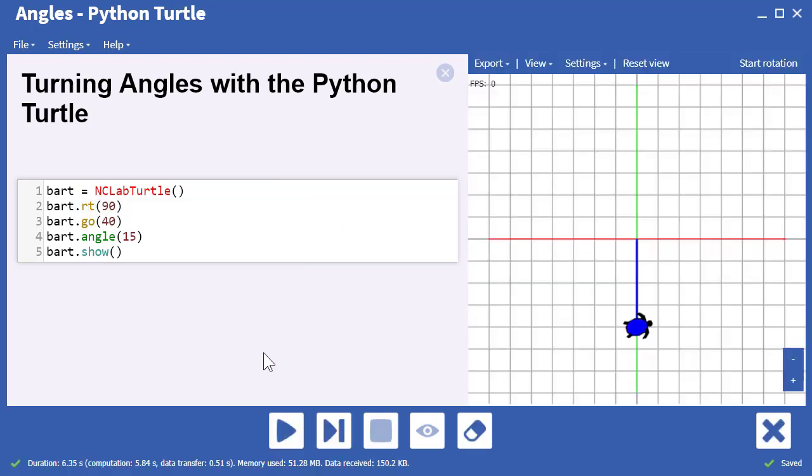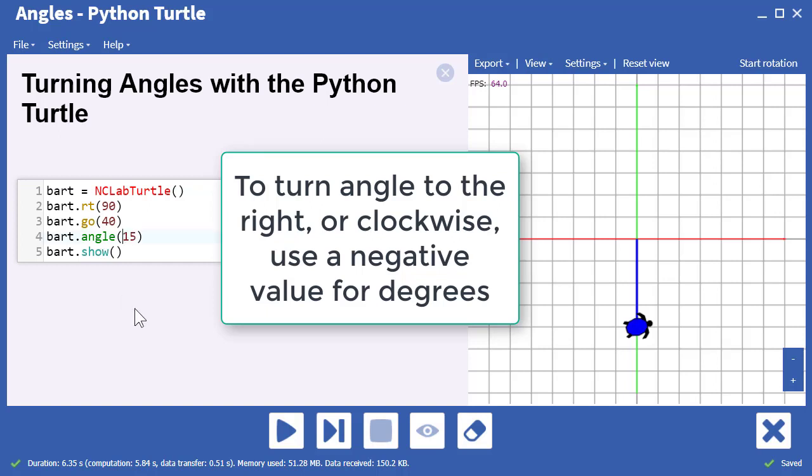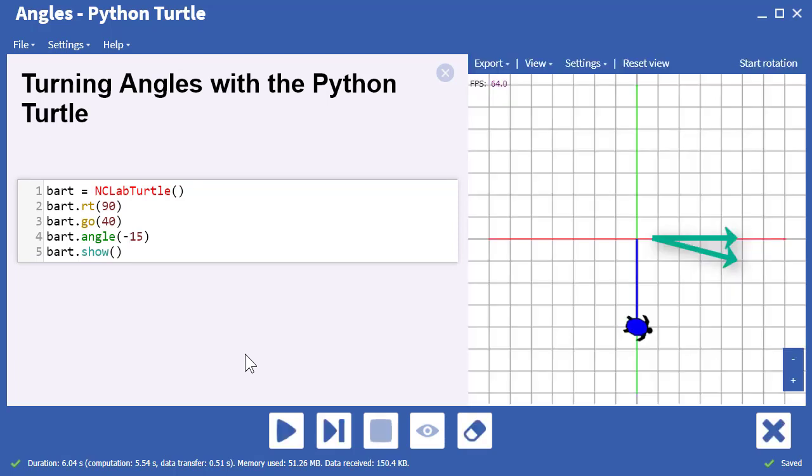By default, the angle command turns left automatically. If you want to turn it right, add a negative sign to your angle and it'll turn to the right instead.